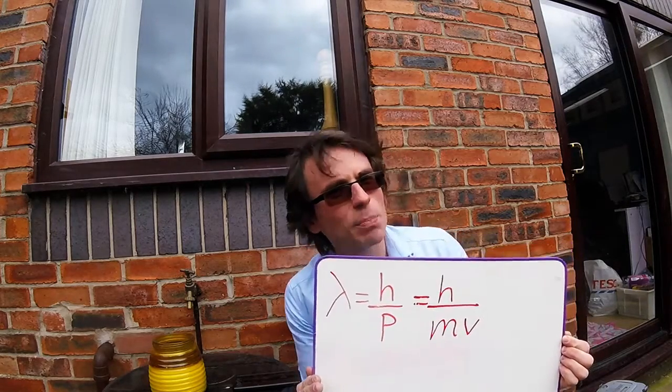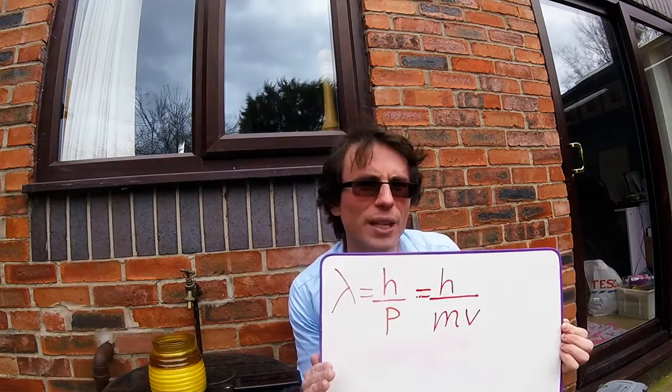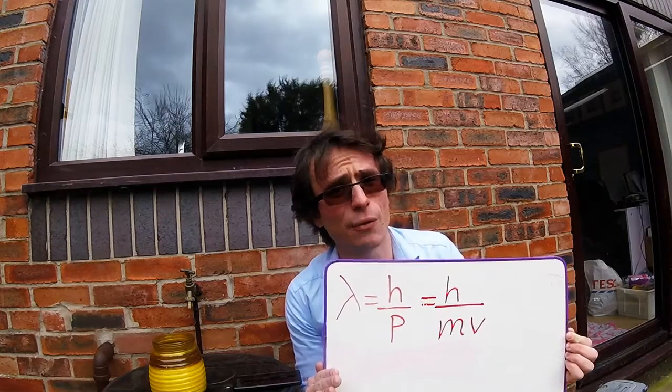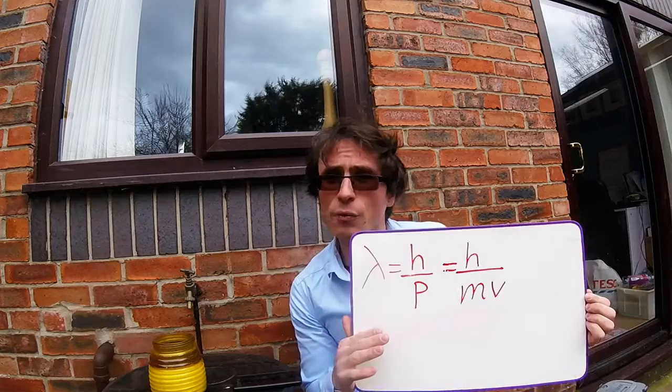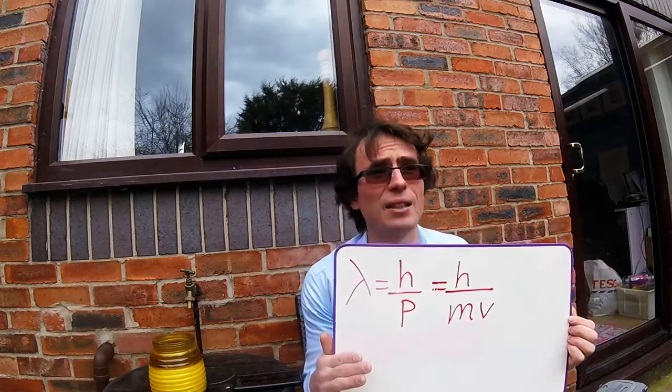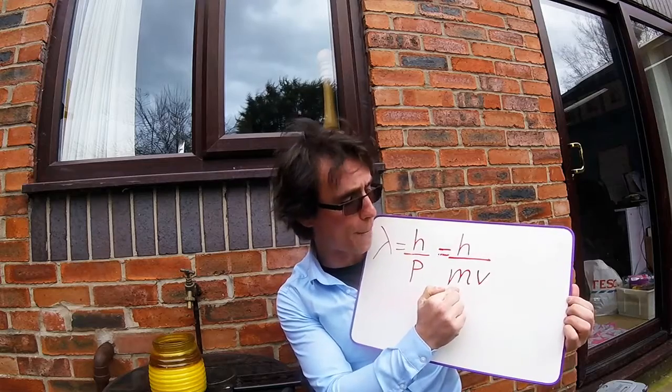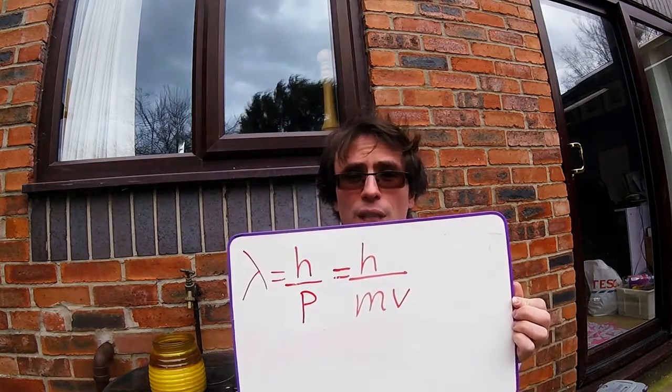We know that this is probably going to be quite a tiny wavelength, because h, remember, is very, very small: 6.63 times 10 to the power of minus 34. That's going to be divided by the momentum. From GCSE and from mechanics, you should know that momentum stands for mass multiplied by the velocity of the particle.